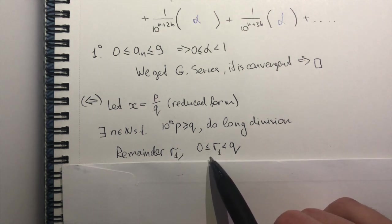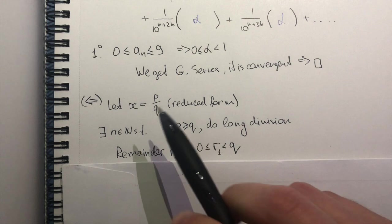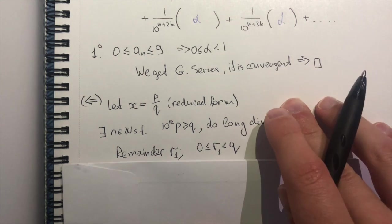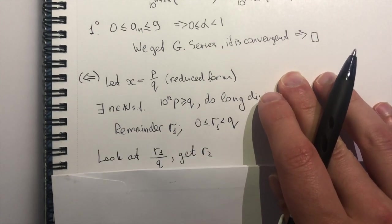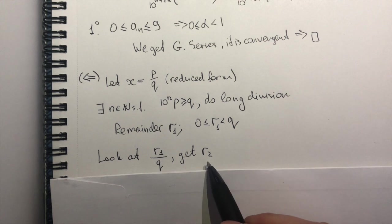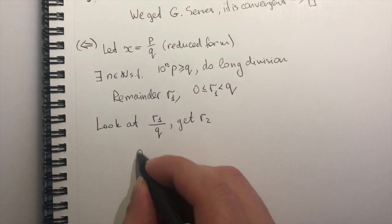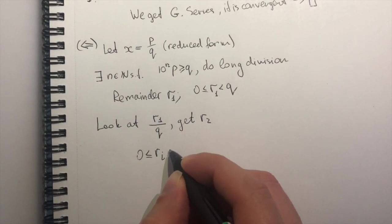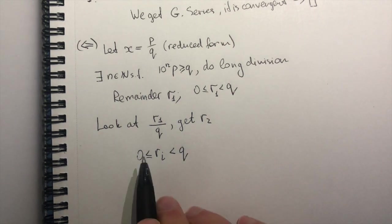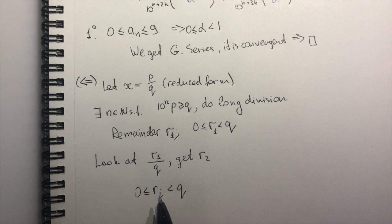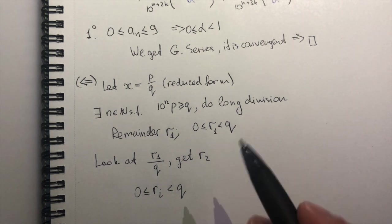Well, this remainder is clearly between zero and q, just by division rules. So now I'm interested in dividing this remainder by q, and I'll get the second remainder. And here comes the trick. All these remainders will be contained between zero and q. And of course, they can only take natural values. So these remainders will be chosen from a finite set.